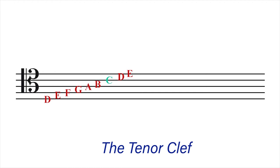When the names of the lines and spaces are separated, the lines become D, F, A, C, E, and the spaces are E, G, B, D.